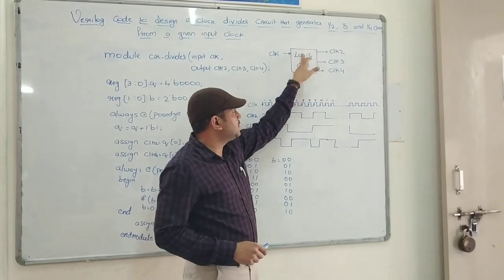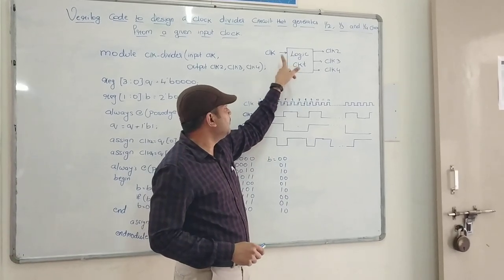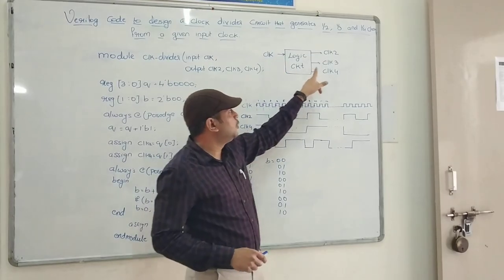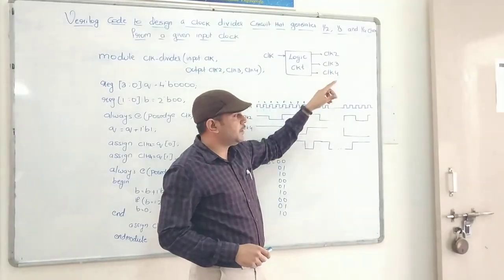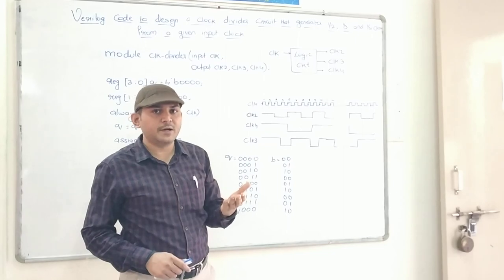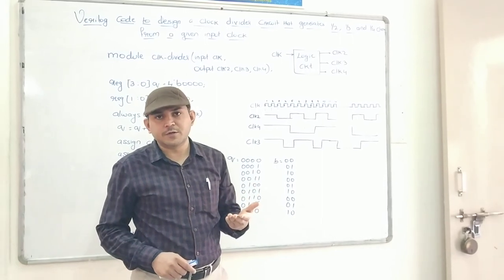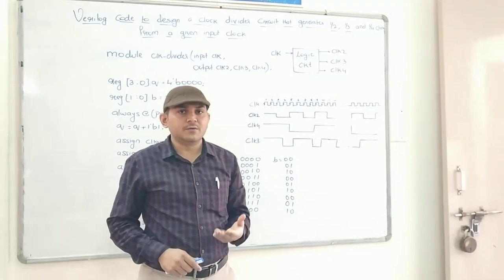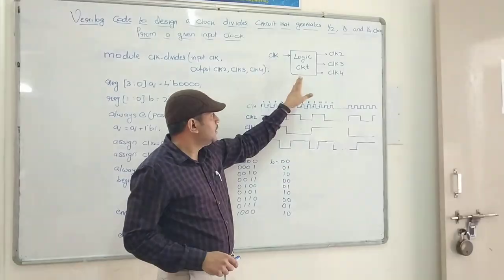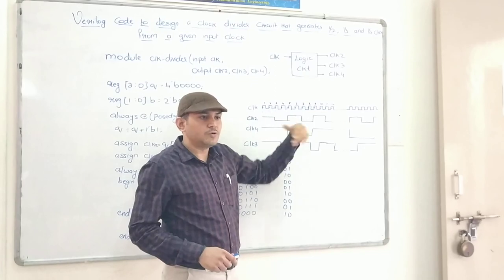Let's understand it better. This is the logic circuit which we have to design by writing the program, and the only input to this logic circuit is the clock which we will get from the board. This clock has to be divided by 2, divided by 3, divided by 4 — meaning we have to divide the frequency of the clock. For example, if it has a 4 kHz frequency, by dividing by 2 we reduce it to 2 kHz; by dividing by 4, we reduce it to 1 kHz. So that is our task — to write a program that generates a logic circuit which divides the clock into various other frequencies.